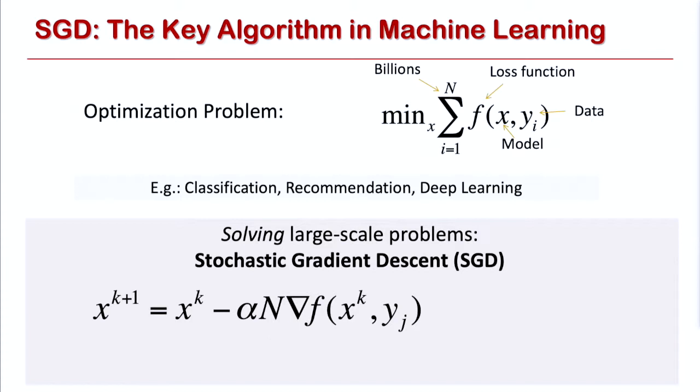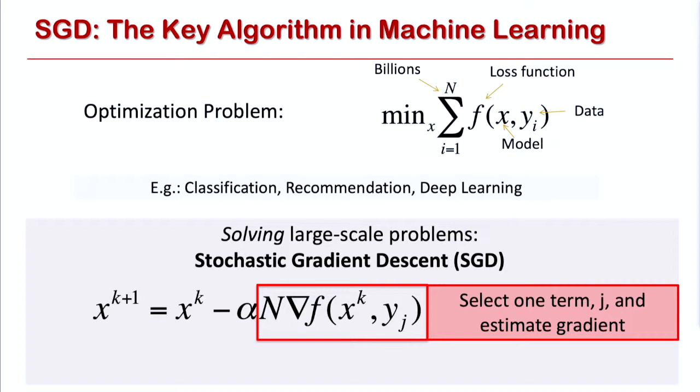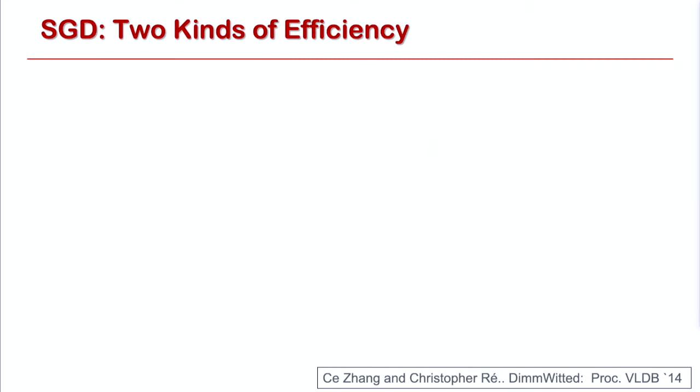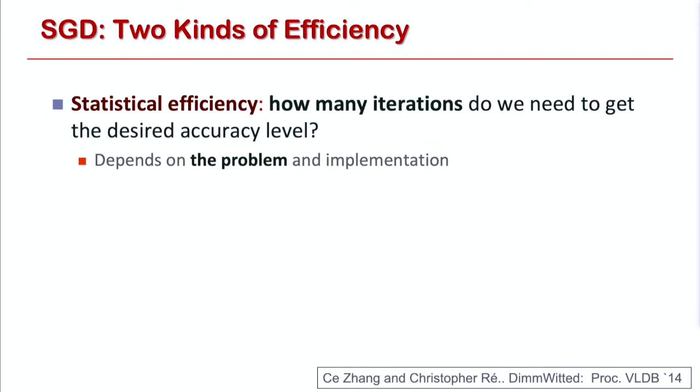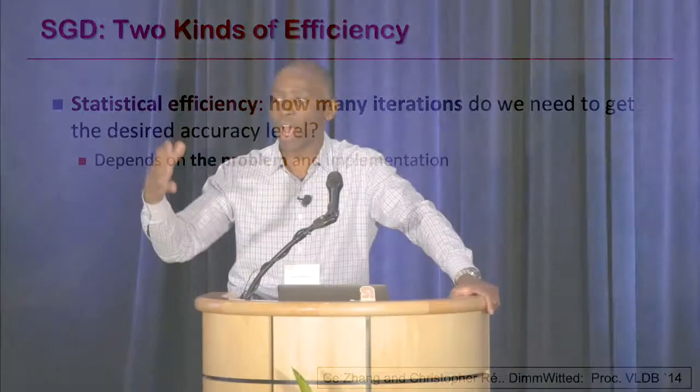Looking at the core of machine learning as an optimization problem — we're finding a model X that minimizes some summation of a loss function over input data Y. You can have billions of training examples. Typically, this optimization is solved using stochastic gradient descent: you take one training example, estimate the gradient, move in the opposite direction, and try to find a model that minimizes the overall loss. There are two kinds of efficiency: statistical efficiency — minimizing the number of iterations — and hardware efficiency — how long each iteration takes. The product of the two gives you the total execution time. You can trade off a little reduced statistical efficiency for much better hardware efficiency.